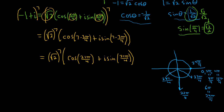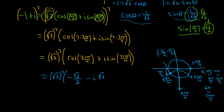Now we're in quadrant three, so both x and y are negative, and the reference angle is pi over four. On the unit circle, this ordered pair is negative root two over two, negative root two over two. So cosine of twenty-one pi over four and sine of twenty-one pi over four are both negative root two over two. This gives us the square root of two to the seventh, times the quantity negative root two over two minus i root two over two. Distributing, you add the exponents — seven plus one equals eight — giving negative square root of two to the eighth over two, minus i times square root of two to the eighth over two.